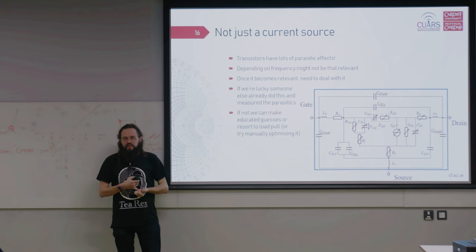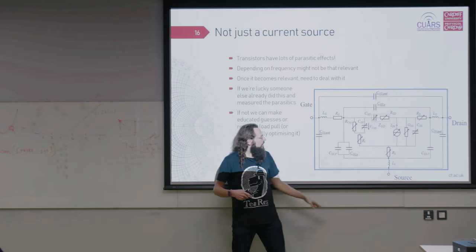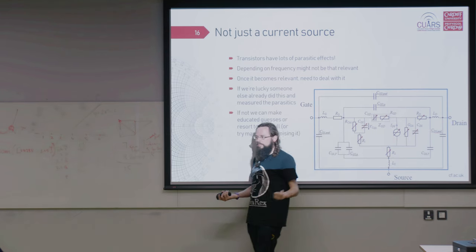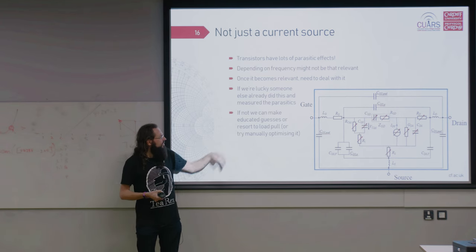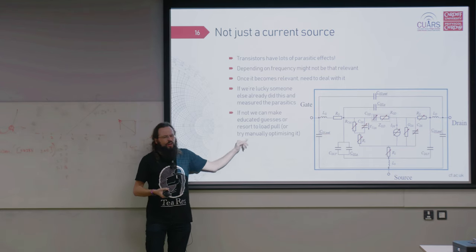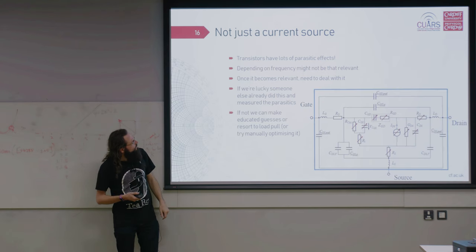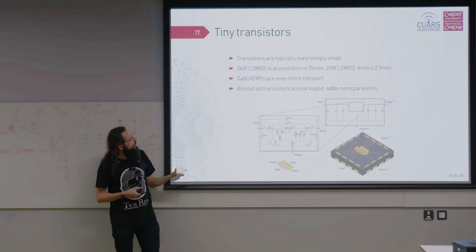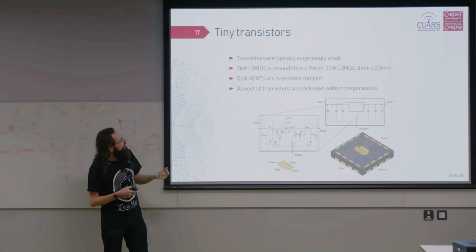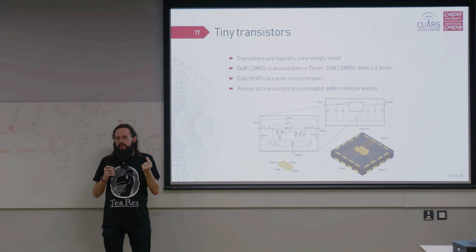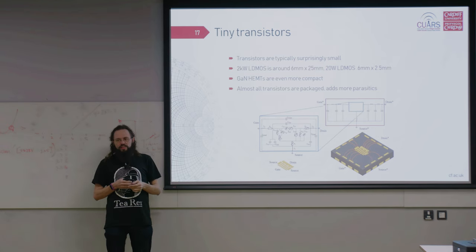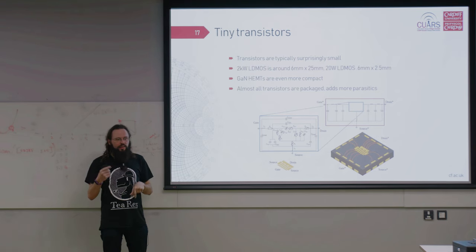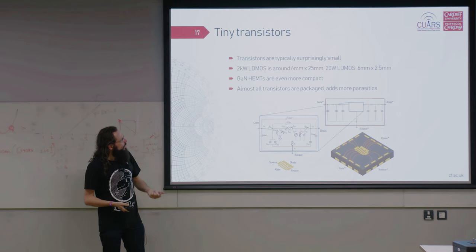If we're lucky, someone else has dealt with them already, and they can tell us what the big capacitances are. For some of them, like for that 10 watt device I mentioned, all of the stuff over here is well known. So you can look it up in a paper and it actually says you what you can put in there. And that makes it fair to you. Or you can make educated guesses based on the size of the device. Or you can try manually optimizing it, which is a bit more tedious. Another issue is that transistors are tiny. The 2 kilowatt LDMOS device has about 6 by 25 millimeters silicon inside. That's not a lot. If you scale it down to 20 watt LDMOS, you have like 4.6 by 2.5 millimeters. It's quite tiny. And gun devices are even smaller.